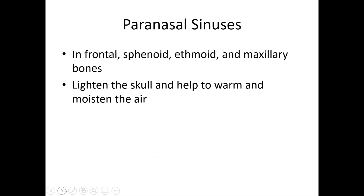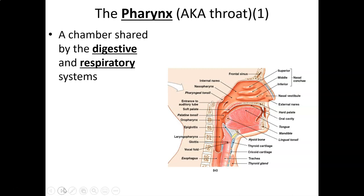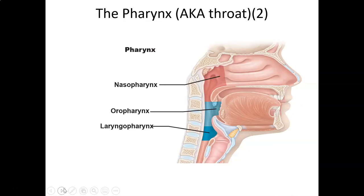The sinuses are hollow places in the sphenoid, ethmoid, frontal, and maxillary bones of the skull. The pharynx is divided into three parts going from the back of the internal nares to the entrance of the esophagus: the nasopharynx, oral pharynx, and laryngeal pharynx.